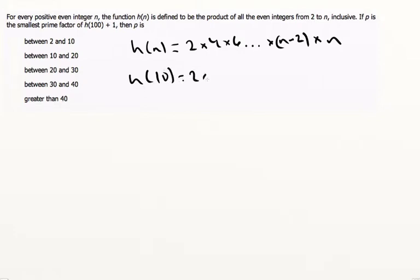So for example, if we did h(10), that would be 2 times 4 times 6 times 8 times 10. Why am I talking about h(n) when we're actually talking about h(100) + 1? Well, in this circumstance I'm looking at h(100) + 1.